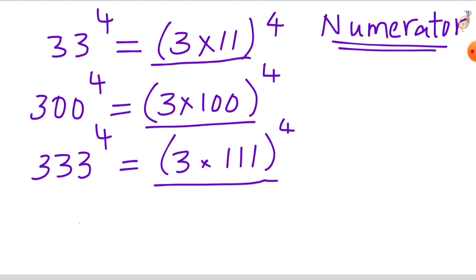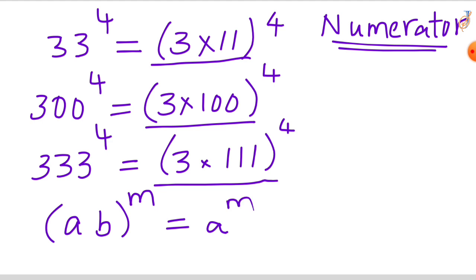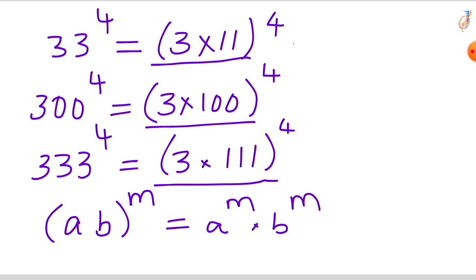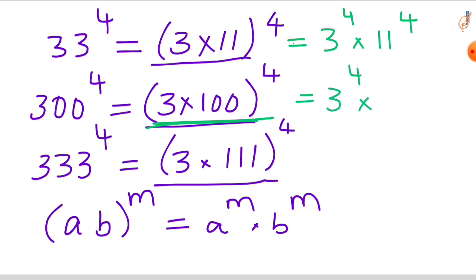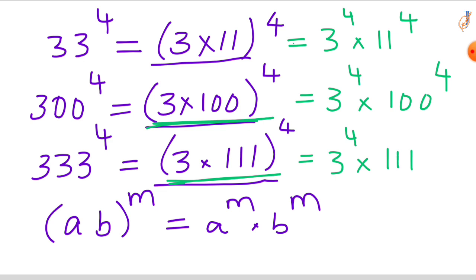All the terms are in the form of (a times b) raised to the power of m. We can write this as a^m times b^m. So the first term, 3 times 11, raised to the power of 4, becomes 3 raised to the power of 4 times 11 raised to the power of 4. The second term, 3 times 100 raised to the power of 4, becomes 3^4 times 100^4. The last term, 3 times 111 raised to the power of 4, becomes 3^4 times 111^4.